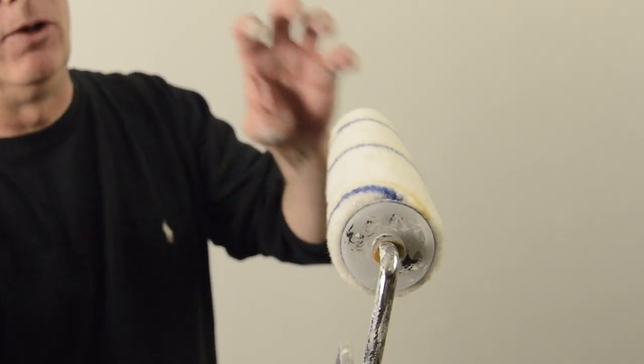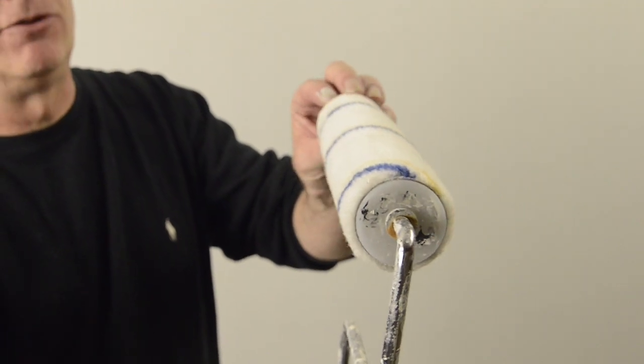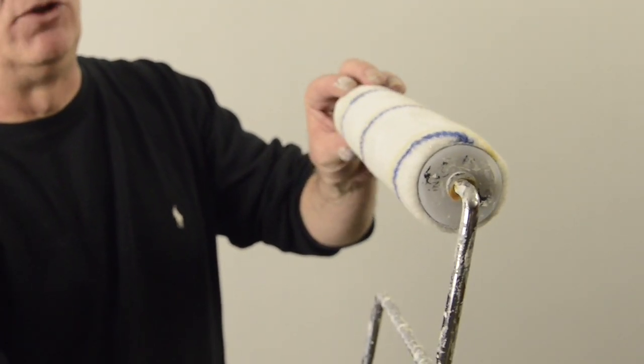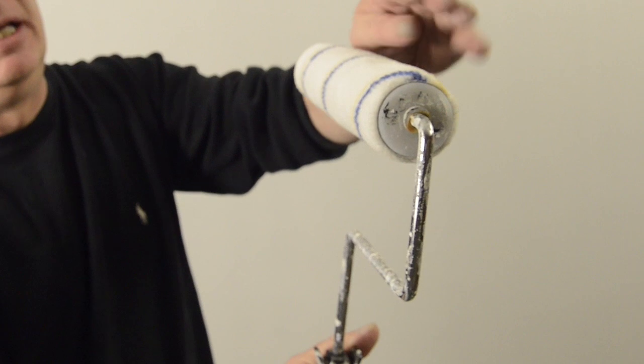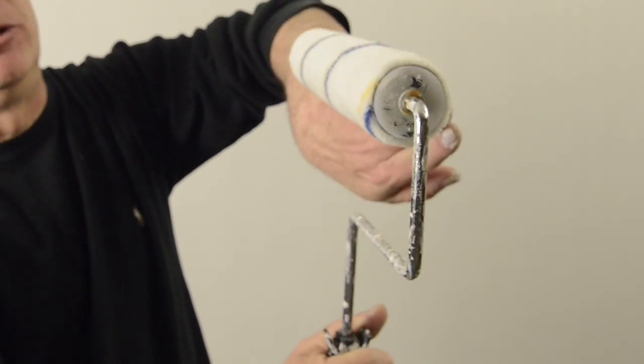What we want to do is we want to orient this roller refill on the cage frame in such a way that when we're doing a downward stroke, it's actually laying those fibers down.